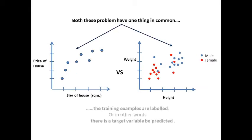Both these problems have one thing in common. The training examples are labeled, or in other words, there is a target variable to be predicted.